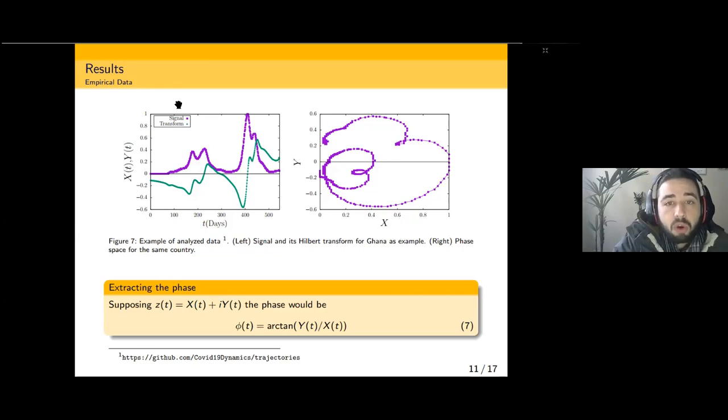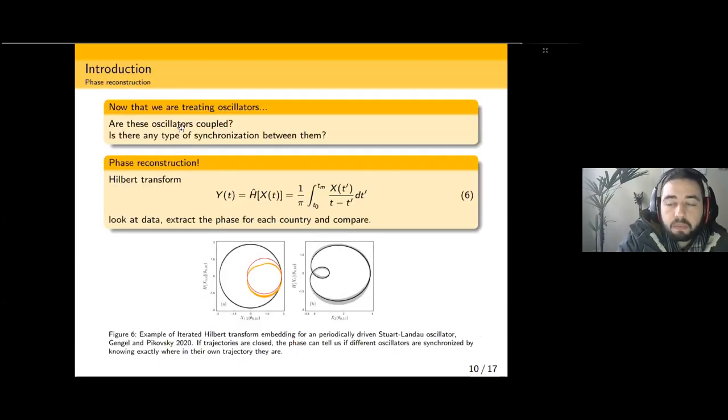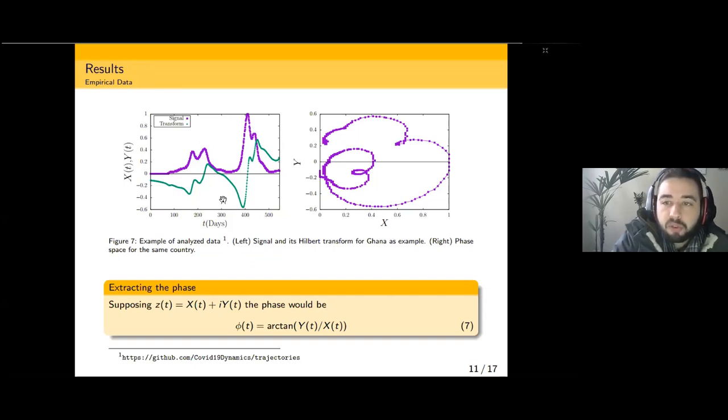Figure 7 left panel shows an example of data we're working with. In purple we have our signal—daily deaths over the course of the pandemic for the country of Ghana. On the same panel, green dots represent the signal's Hilbert transform obtained from directly applying equation six previously represented by Olajumoke.